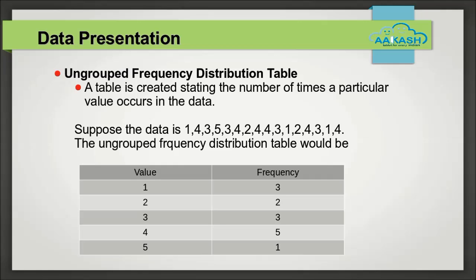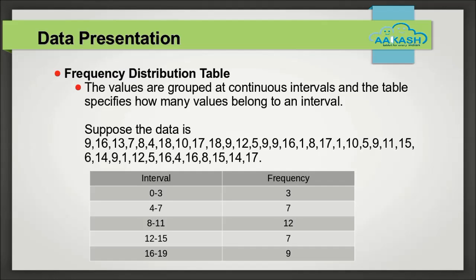When data is large but spread across a small range, we can find the number of times each value occurs in the data and write the results in a tabular form. This is called ungrouped frequency distribution. However, if the range is large and contains many unique values, the frequency distribution table would become very long.